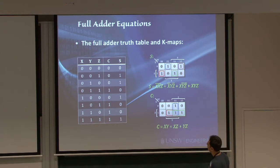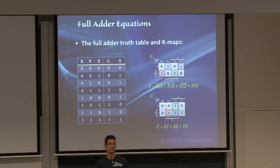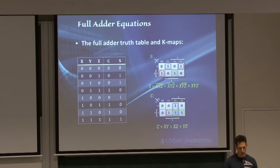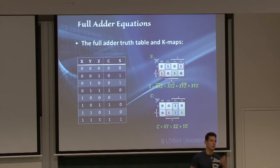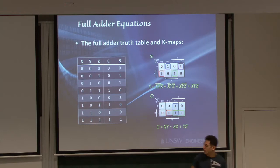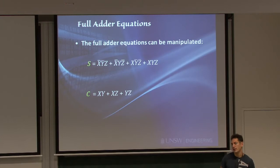In a similar process to before, I have x, y, and carry-in z that can be 0 or 1, and I produce the sum and carry-out. This truth table repeats exactly what I had in the previous slide. I've already done the Karnaugh maps — by week 9 you don't need more practice with them. We can see the equations are much more complicated than what we had for the half-adder, but it's slightly more useful as well.